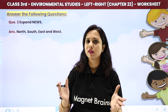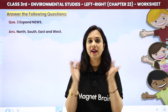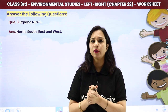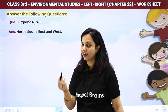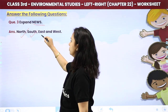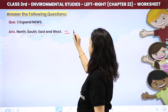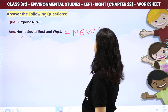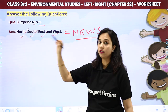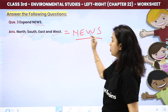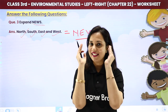Now, expand NEWS. We learned how the word 'news' was formed. What is the full form of NEWS? North, East, West and South — and that is how the word 'news' was made. N for North, E for East, W for West, and S for South. That's how you got the word 'NEWS'.